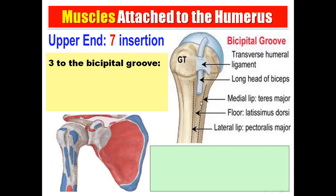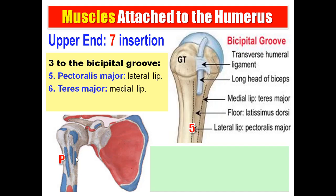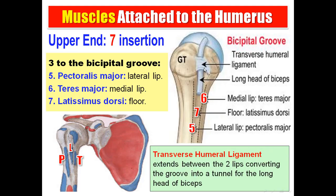The bicipital groove gives insertion to three muscles and attachment to one ligament. The lateral lip gives insertion to pectoralis major; the medial lip gives insertion to teres major; the floor gives insertion to latissimus dorsi. The lips of the bicipital groove give attachment to the transverse humeral ligament, which converts the groove into a tunnel for the long head of the biceps.